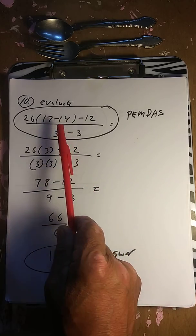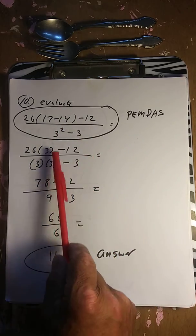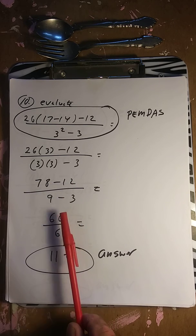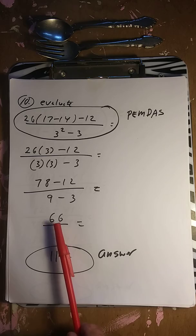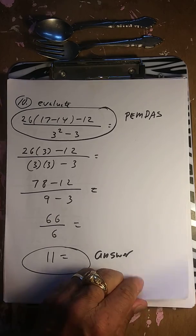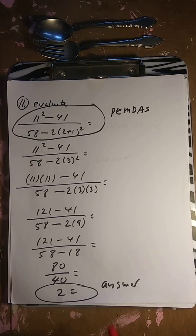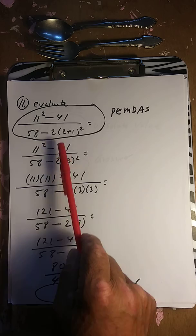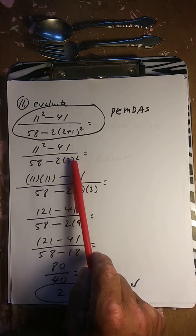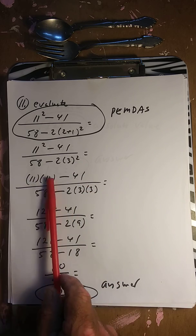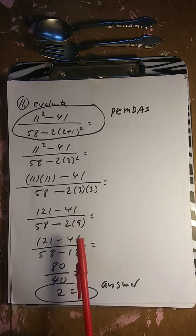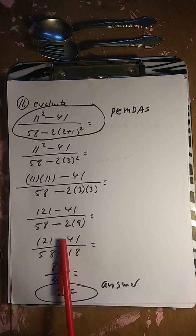Order of operations again. Do parentheses first: 17 minus 14 is 3. Three squared means 3 times 3 equals 9. We have 78 minus 12 on top divided by 66. 78 minus 12 is 66, and 66 divided by 66 is exactly 1. Then evaluating a fraction: 11 squared is 121, 3 squared is 9, giving 121 minus 41 over 58 minus 18, which is 80 over 40, which equals 2.